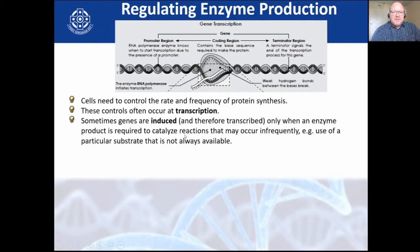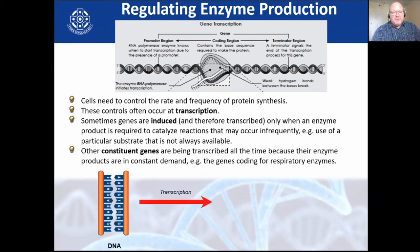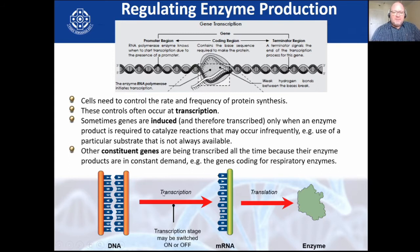Sometimes genes need to be induced — only made when they are needed. Other constitutive genes are being transcribed all the time because their product is in constant demand, such as respiratory enzymes. We know that DNA goes through transcription, and if you turn the promoter region on or off, transcription is turned on or off, which means the amount of enzyme is regulated. By regulating transcription, we are regulating the enzyme.